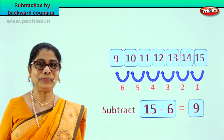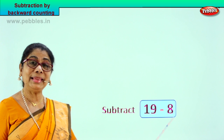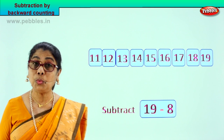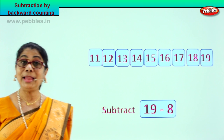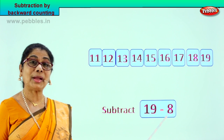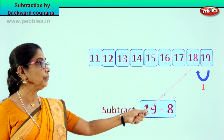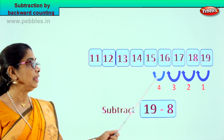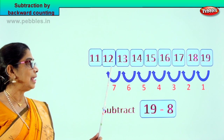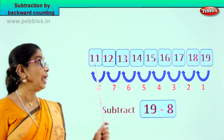Shall we take another sum? Look what we have here. We are supposed to subtract 19 minus 8. Here from 19 you will count 8 steps backward and you will arrive at the answer. Shall we? You got 19 numbers here, you are supposed to come backward 8 steps. Let's count from 19. 1, 2, 3, 4, 5, 6, 7, 8. From 19 we counted 8 steps backward and we got the answer.